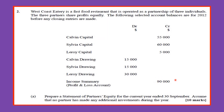We know it's a profit because it has a credit balance. Part (a) asks us to prepare a statement of partners' equity for the current year ended 30th September, assuming no partner has made any additional investment during the year. When we say equity, we are looking at the capital and all of the reserves. In a partnership, the reserve would be the current account.